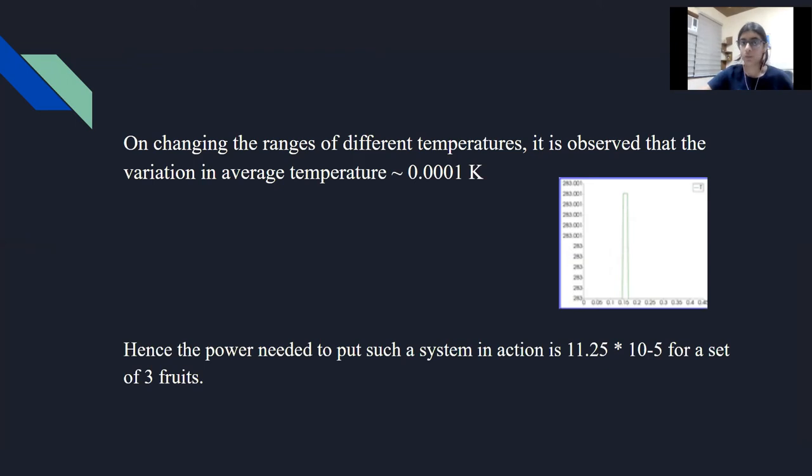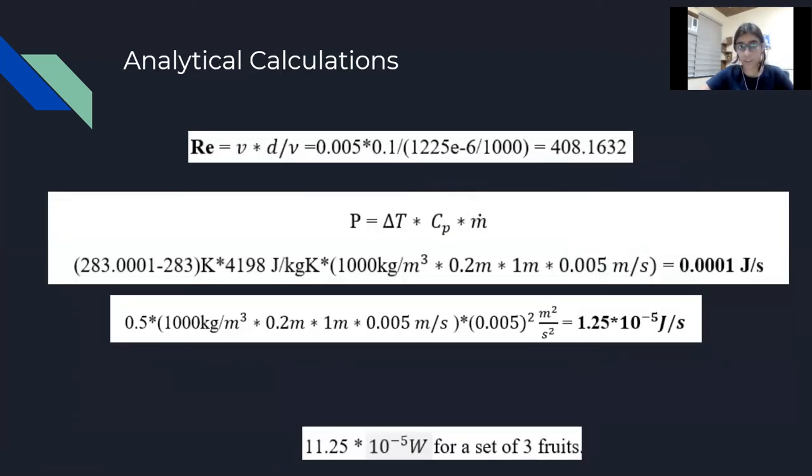Now, in our present case for the mesh which I had shown, we simulated the case and on changing the different ranges of temperatures, we observed that the variation was around 0.001 Kelvin and hence the power needed is calculated as shown here. The Reynolds number for a velocity of 0.005 came out to be in the laminar range which is 408. The power required for the temperature difference of 0.0001 is calculated as follows: delta T into Cp of water which was our fluid times m dot according to a rectangular channel as shown in the geometry and this was the value it calculated out to be. Also the change in kinetic energy has been calculated here. Basically the entire energy which we required was of the order of 10 to the power minus 5 watts for a set of 3 fruits.